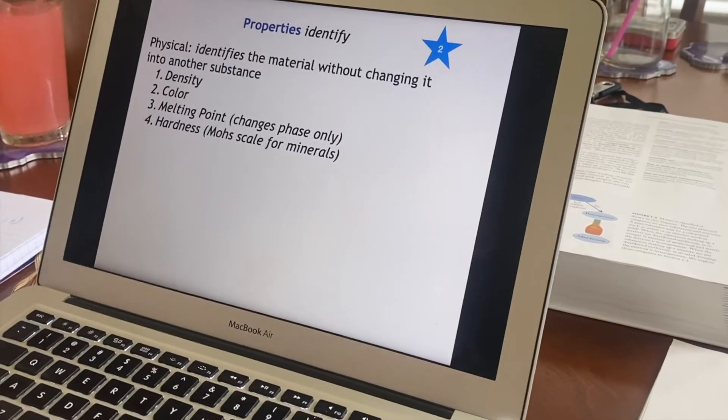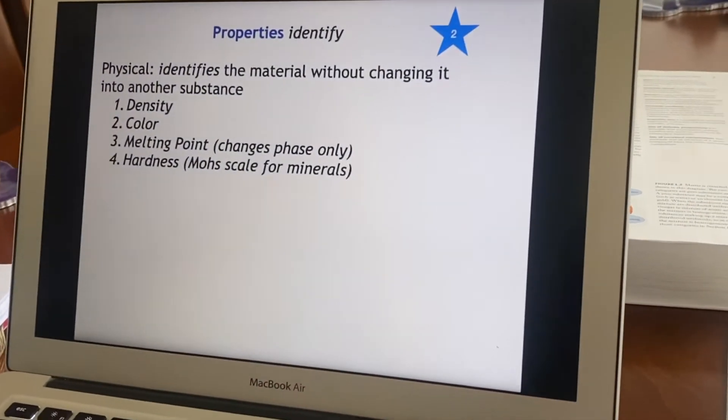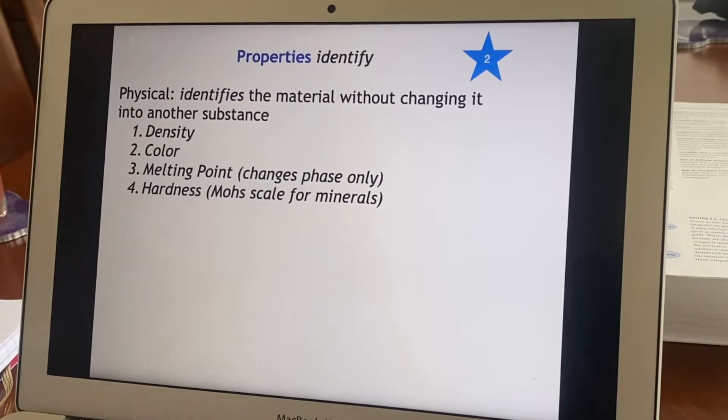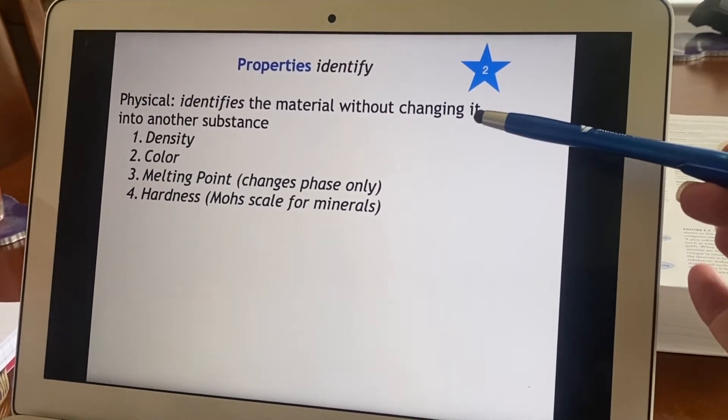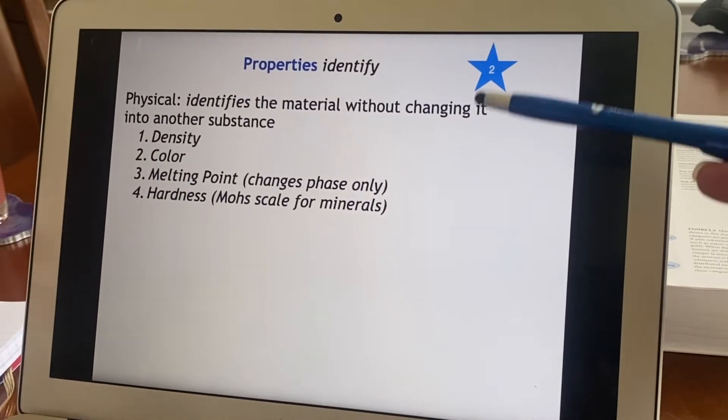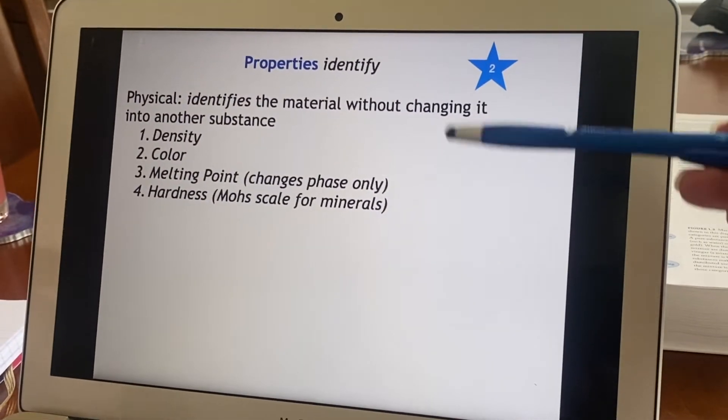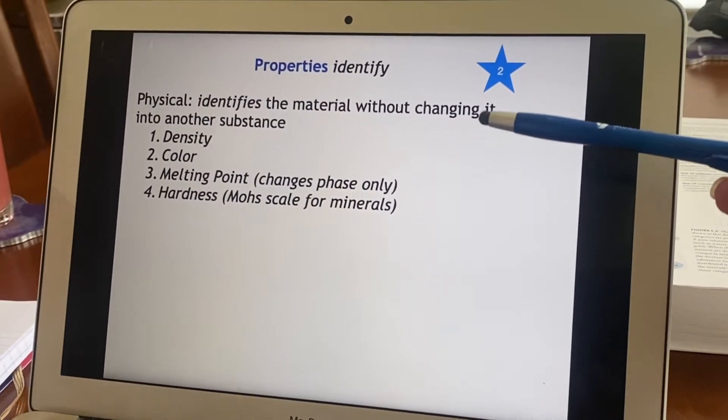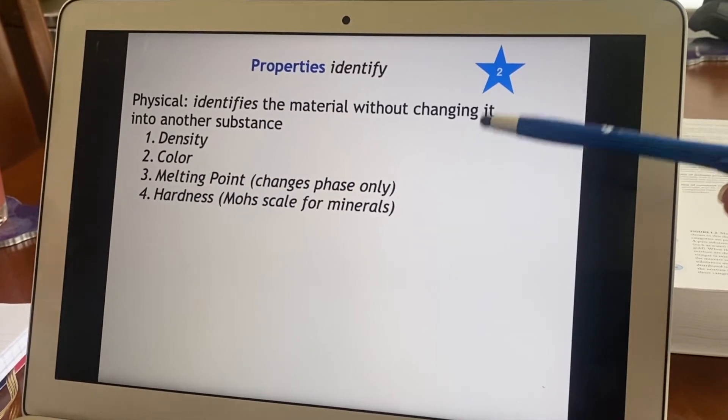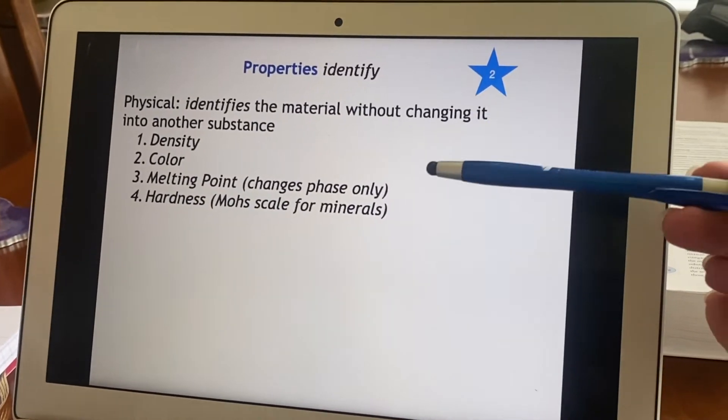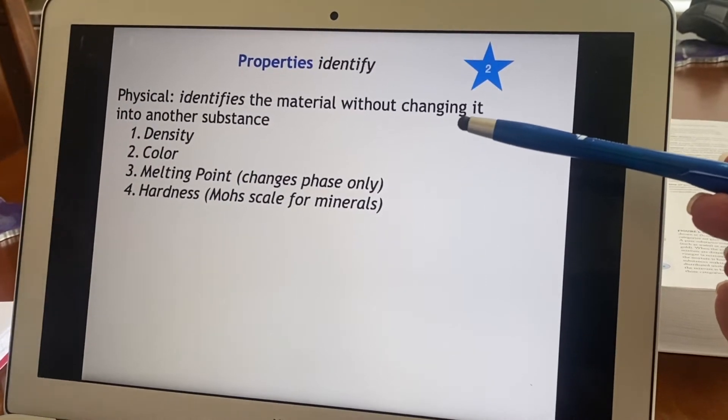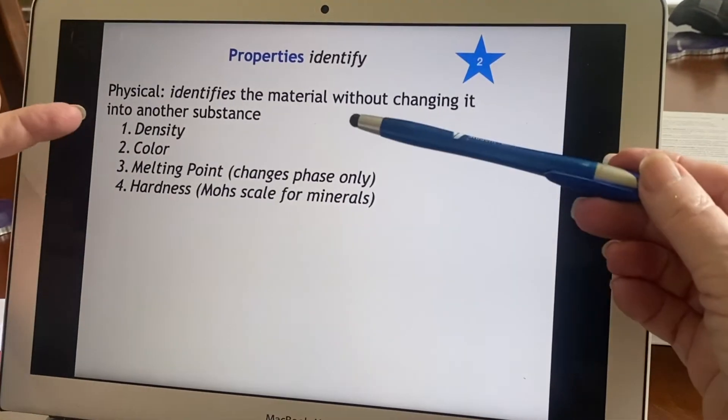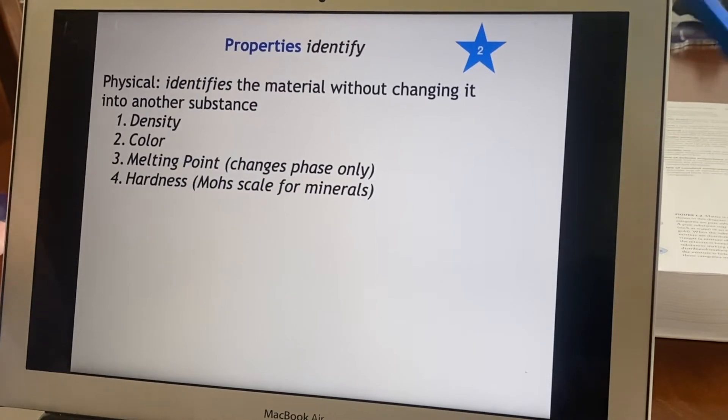We use properties to identify things. So what sort of properties are there? Well, first of all, physical ones. The physical properties, you can identify the material without changing it into something else. You should always try to identify with physical properties first because it won't degrade your sample. Your sample still remains. You've still got that same sample. It hasn't been changed in any way. Density.